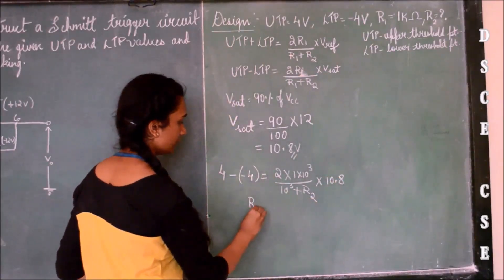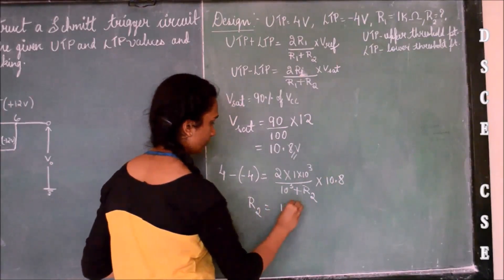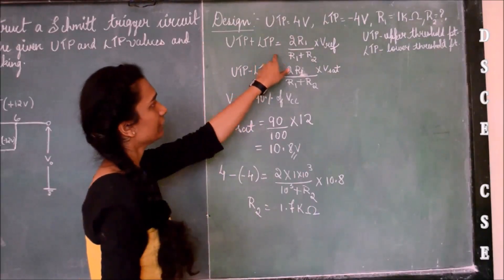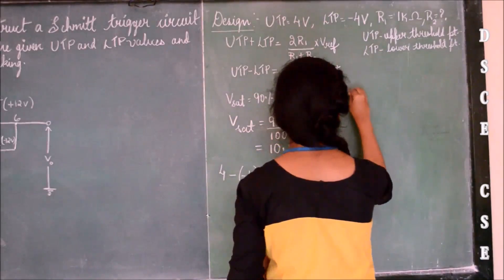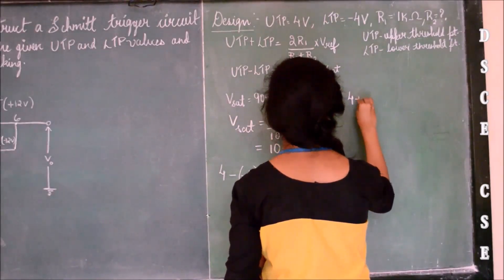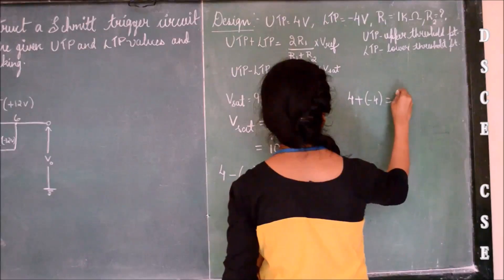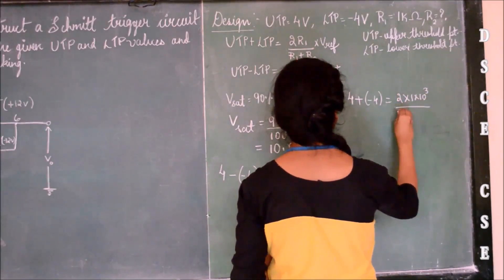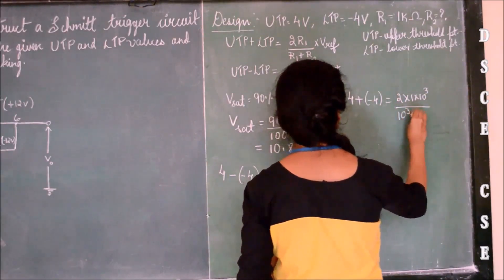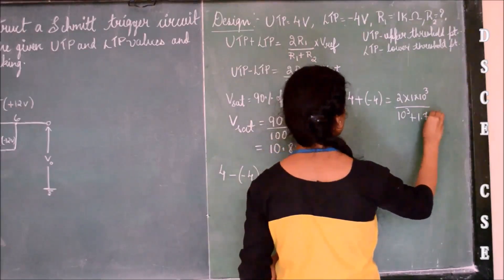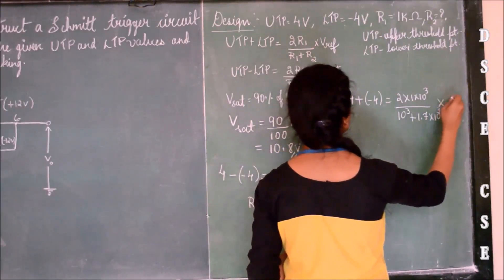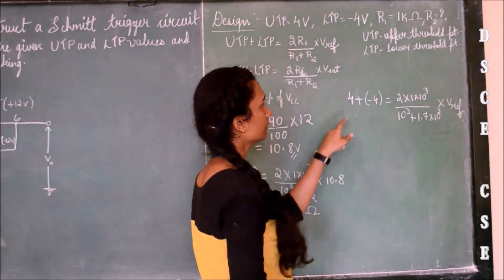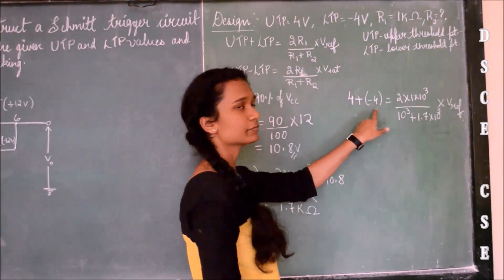Now let us calculate the value of R2 and R1. Using the formulas, let us also calculate the value of V reference. V reference will be 0 because the UTP and LTP values are 4 and minus 4 respectively, making the sum equal to zero.